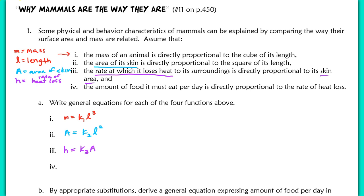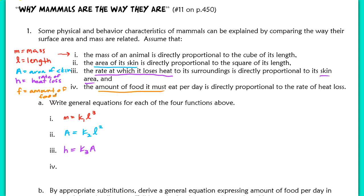Finally, for line 4, the amount of food the animal must eat per day is directly proportional to the rate of heat loss. Let F equal the amount of food the animal must eat per day. So we have F equals K sub 4 times H. These are the general equations for each of the four functions listed above.